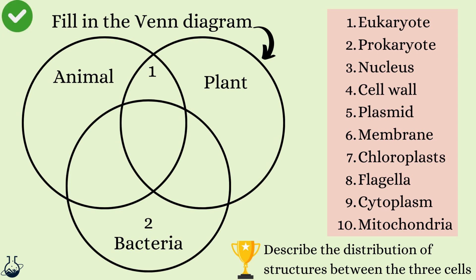Let's go through the rest of the ideas together — tick your correct answers and annotate anything you missed. Number 3, nucleus, is only in animal and plant cells. Number 4, cell wall, which animal cells do not have but plant and bacteria do — so it goes in the plant-bacteria overlapping section. Number 5, plasmids, only found in bacteria. Number 6, cell membrane, is relevant to all of them so it goes in the middle. Number 7, chloroplasts, only in plant cells. Number 8, flagella, only in bacteria. Number 9, cytoplasm, is found in all three so it goes in the middle. Number 10, mitochondria, is a eukaryotic cell feature so it goes in the top middle section.